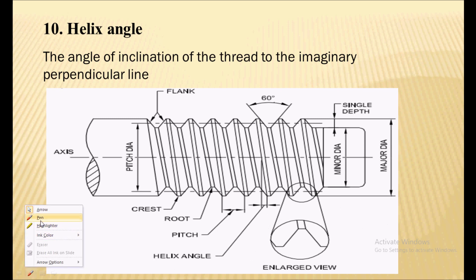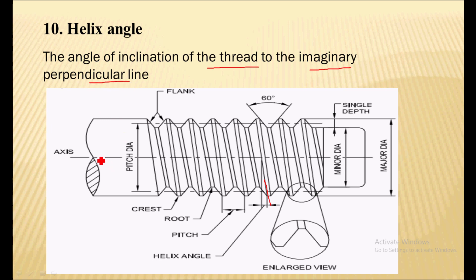Next is the helix angle. The helix angle is the angle of inclination of the thread to an imaginary line drawn perpendicular to the screw axis. This angle of inclination of the thread to the line drawn perpendicular to the axis is called as helix angle.